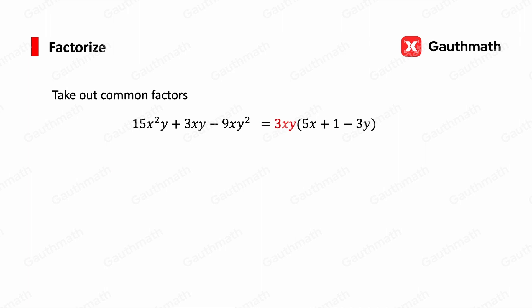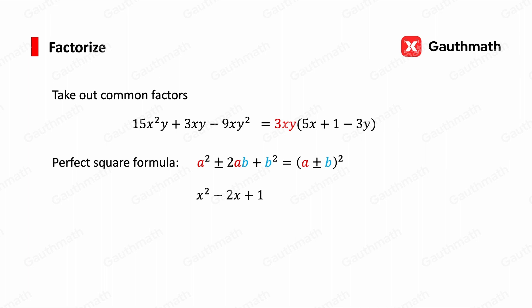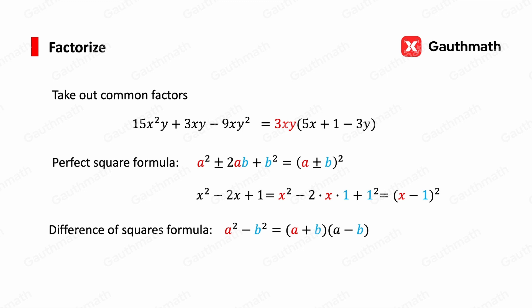In addition to taking out common factors, we have two more formulas for factorization. The first is the perfect square formula: a² ± 2ab + b² = (a ± b)². For example, x² − 2x + 1 = (x − 1)². The second is the difference of squares formula: a² − b² = (a + b)(a − b). For example, x² − 4 = x² − 2² = (x + 2)(x − 2).